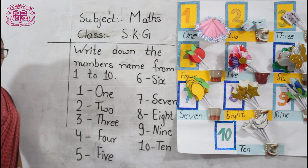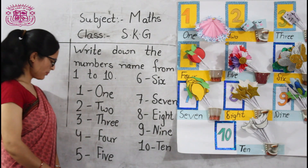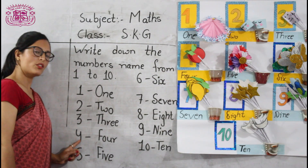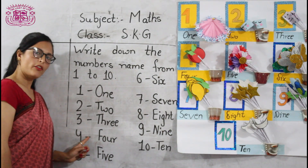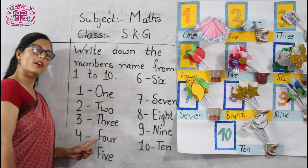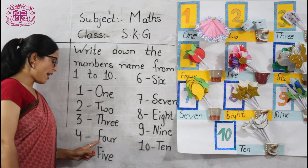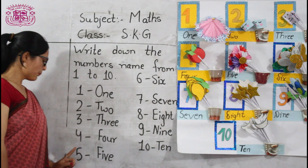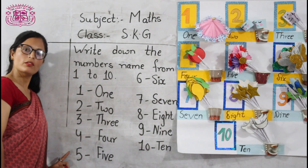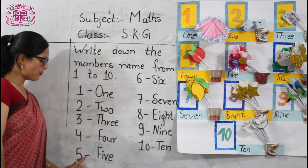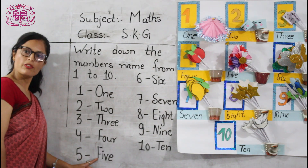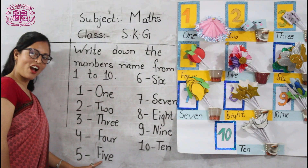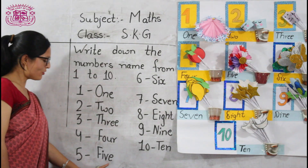What comes after 3? 4. Yes, very good. What is the spelling of 4? F-O-U-R, 4. And what comes after 4? Very good. 5. What is the spelling of 5? Very good. F-I-V-E, 5.